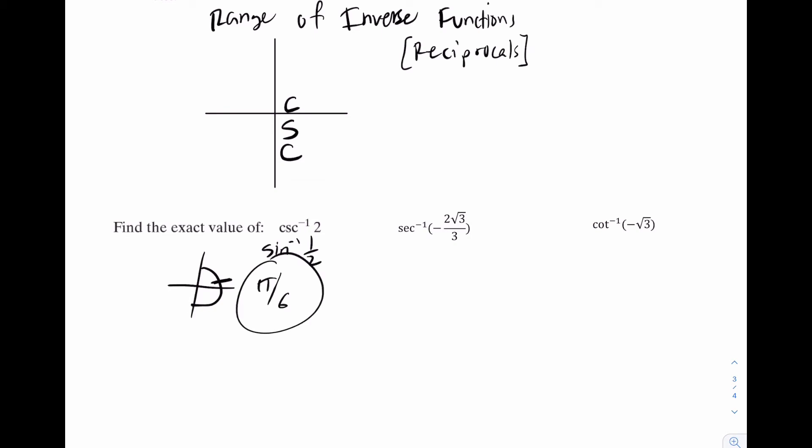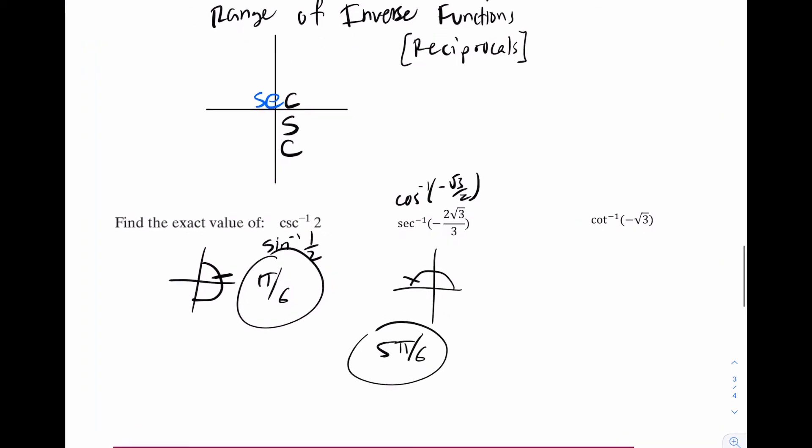Now, secant inverse, that's very similar to cosine. You're going to write one and two. So I'm going to highlight one and two. And again, some people like to think about cosine inverse of negative due to the reciprocal. That's a root three over two. That would be right here. So that's five pi over six. It's really nothing new yet.